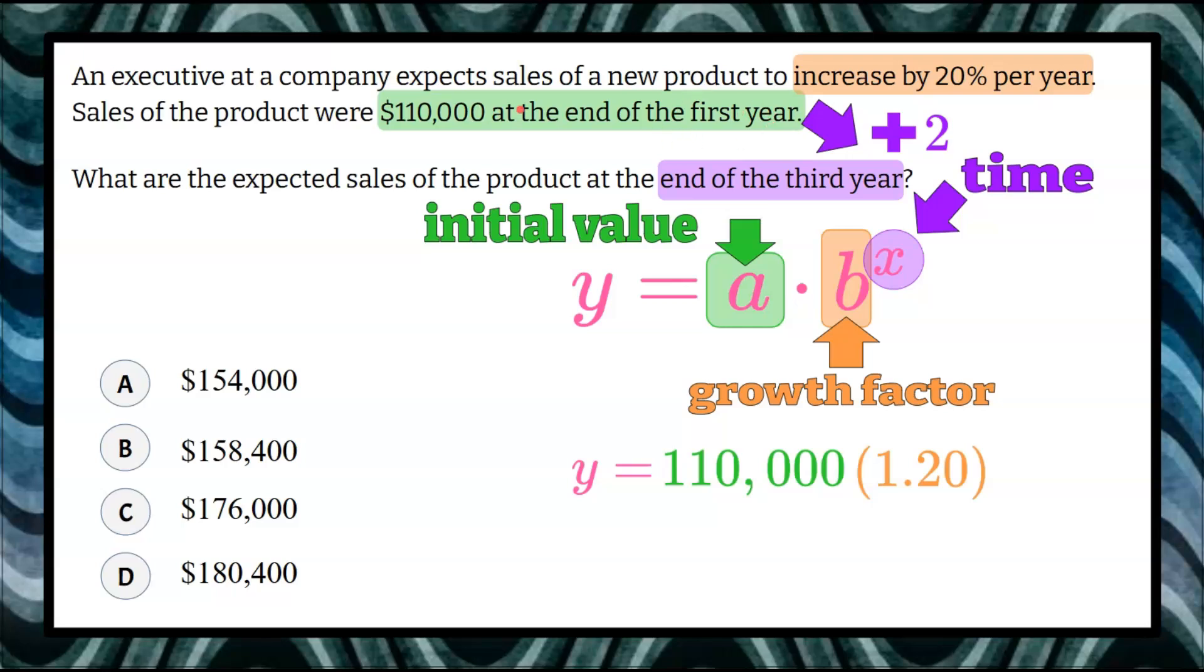We have to wait until year one is done to have our initial value. We're now growing to get to the third year, two additional years. So our exponent here is two, not three.